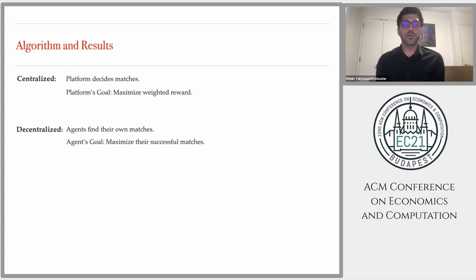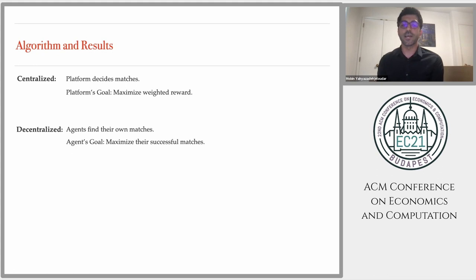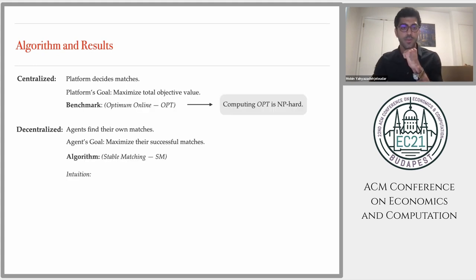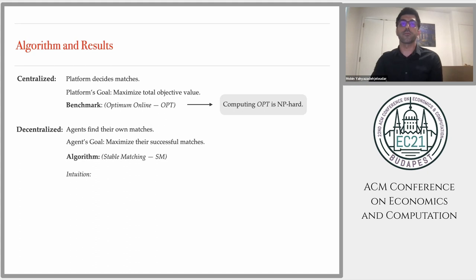In this presentation, we will compare centralized and decentralized algorithms. In a centralized algorithm, an online algorithm decides centrally for everyone how to match, with the goal of maximizing the total weighted reward. In a decentralized algorithm, agents find their own matches in a decentralized manner and try to maximize their own successful matches. As a benchmark, we consider the centralized optimum online algorithm that adaptively selects a matching in each round using information learned from previous rounds — we call this algorithm OPT. In the paper, we show that computing OPT is NP-hard.